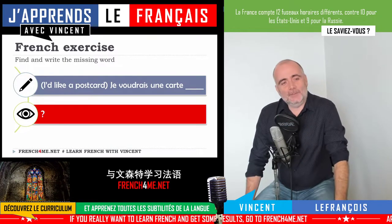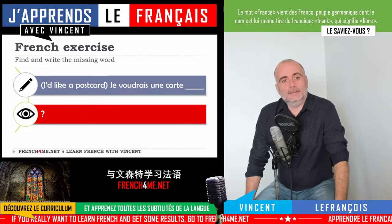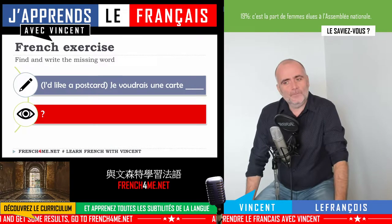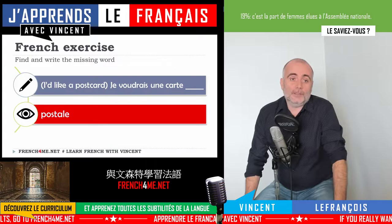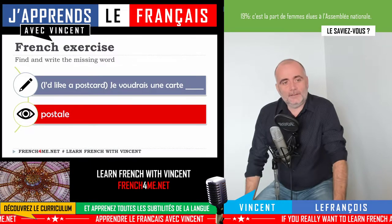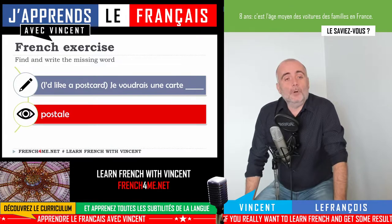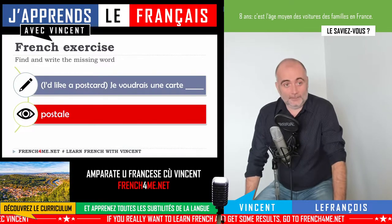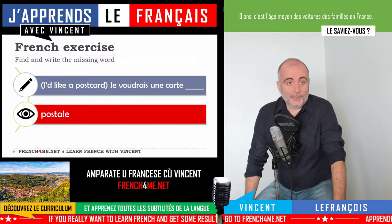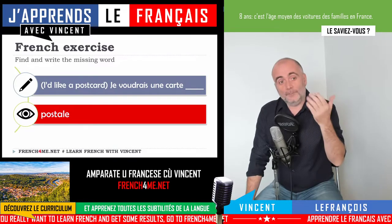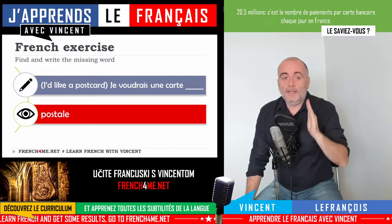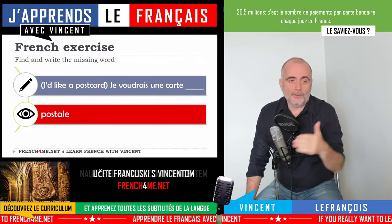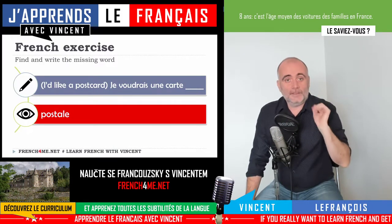Let's have a look at the next one: 'I would like a postcard' — 'je voudrais une carte'. What is missing? It's not really difficult — it's just a basic adjective: 'postal'. Remember to put the feminine form — 'postal' with E at the end. The masculine form of postal is P-O-S-T-A-L, but in that case you just add the E. Same pronunciation, but it's the feminine form.